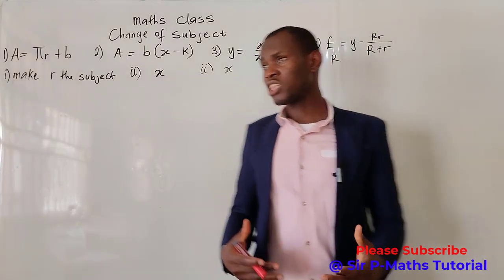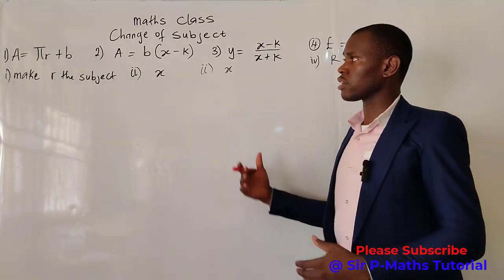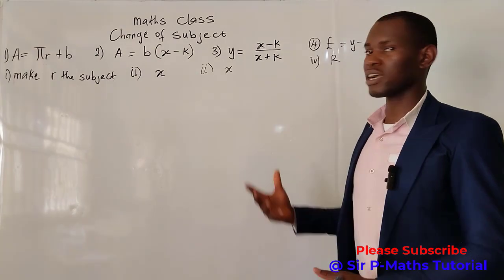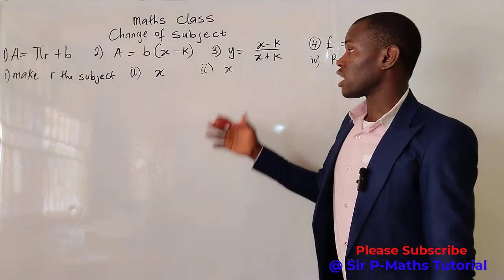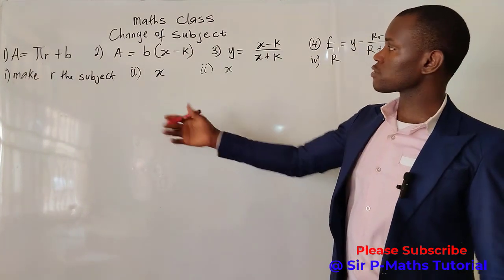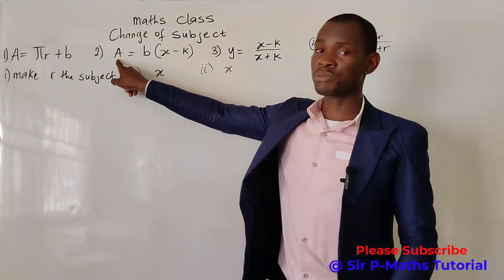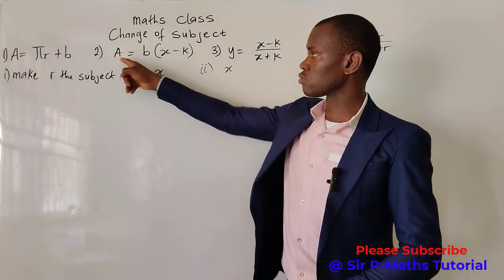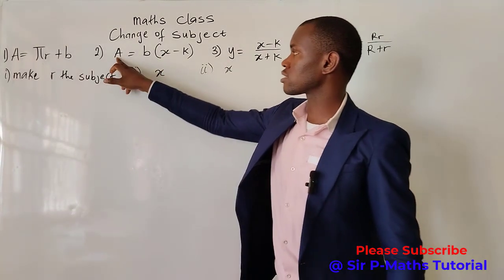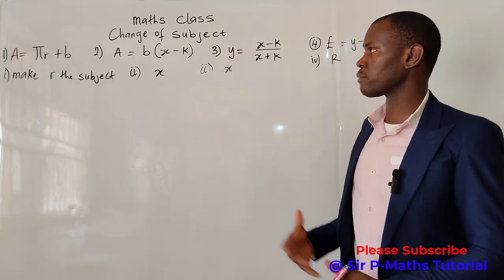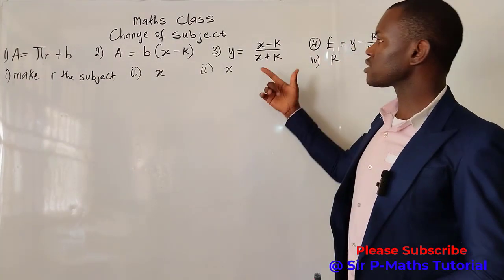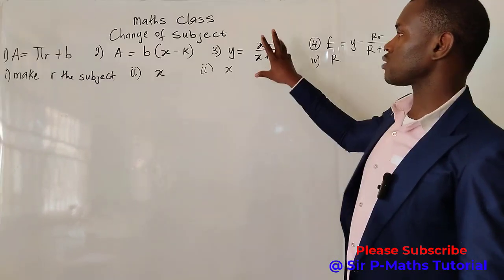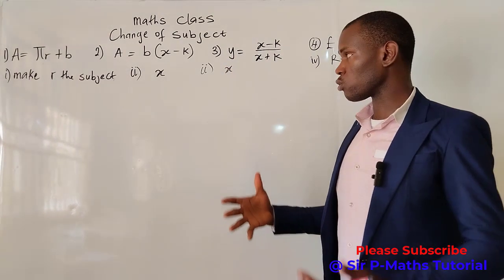Welcome to Sapima Tutorial. Today we are going to be looking at change of subject formula. We will start from the simple to the complex. Given an equation, the leading variable is what we call the subject — the dependent variable. This variable is dependent on the values of other variables to get its own value. The subject is always the dependent variable, and making a variable the subject means bringing it out to stand alone.